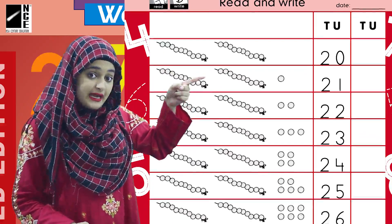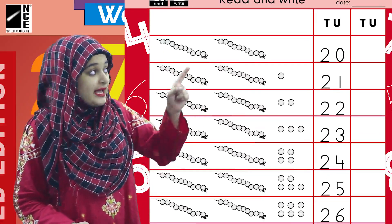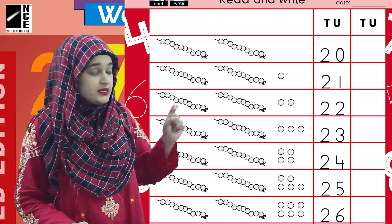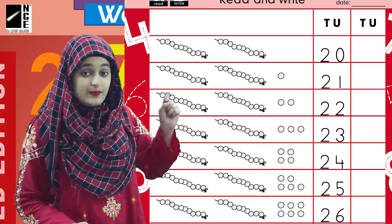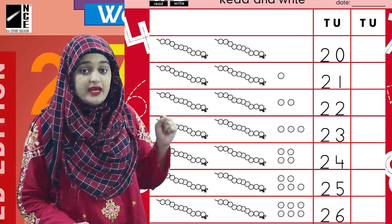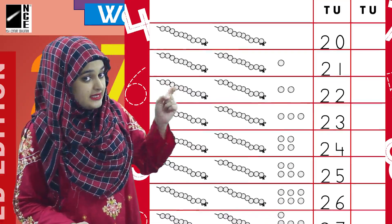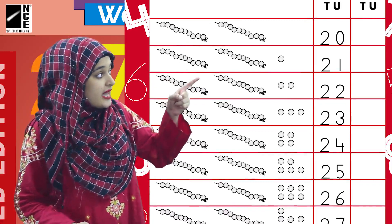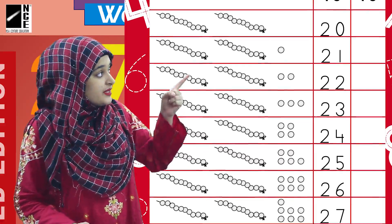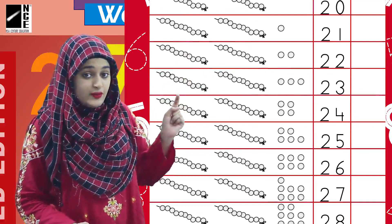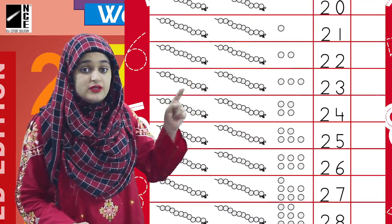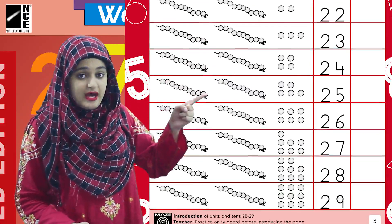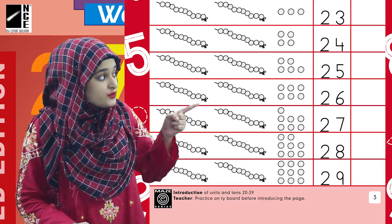Likewise, when 20 meets 2 beads they make 22, and the number 22 is here. Twenty and 3 beads make 23. In the same way we have 24, 25, 26, 27, 28, and 29. You have now seen all these numbers and you know the procedure — the numbers are written here for you to read.